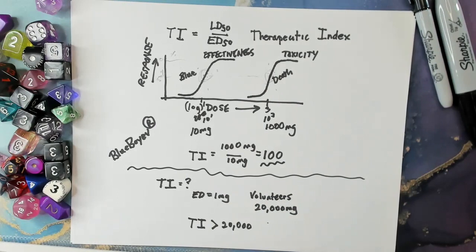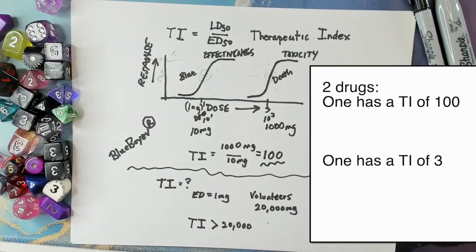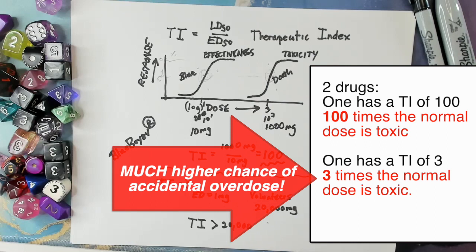This is a big issue clinically. Say you have a suicidal patient and you have two different drugs to try for their depression: one with a therapeutic index of 100, and one with a therapeutic index of three. If they're suicidal, one way they could harm themselves is with their medication. So you're not going to want to give them a drug with a very low therapeutic index, because if they took a handful of those pills they might die. You want to find antidepressants with high therapeutic indices. A low therapeutic index means the patient is at higher risk of toxicity if they take more than the recommended dose.